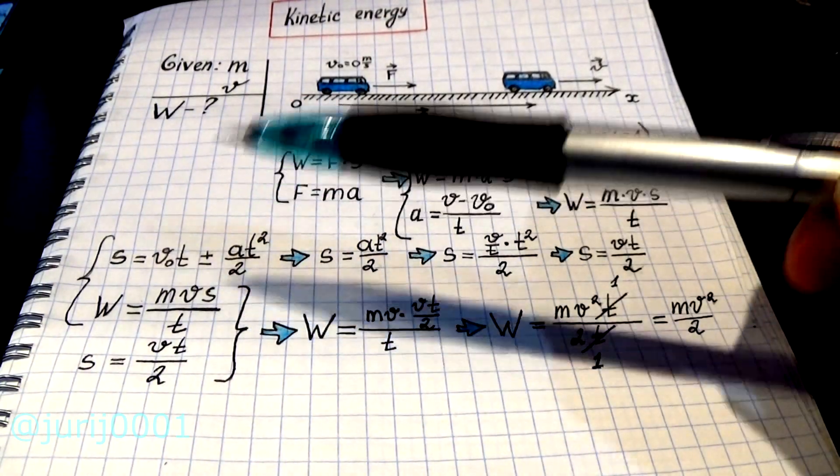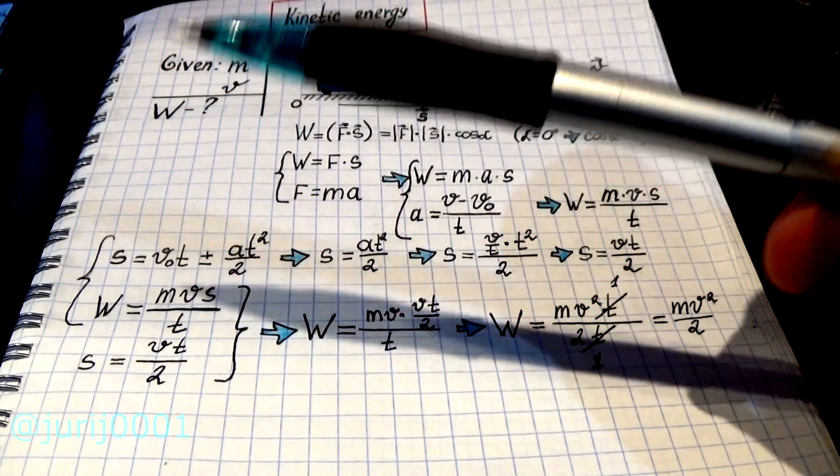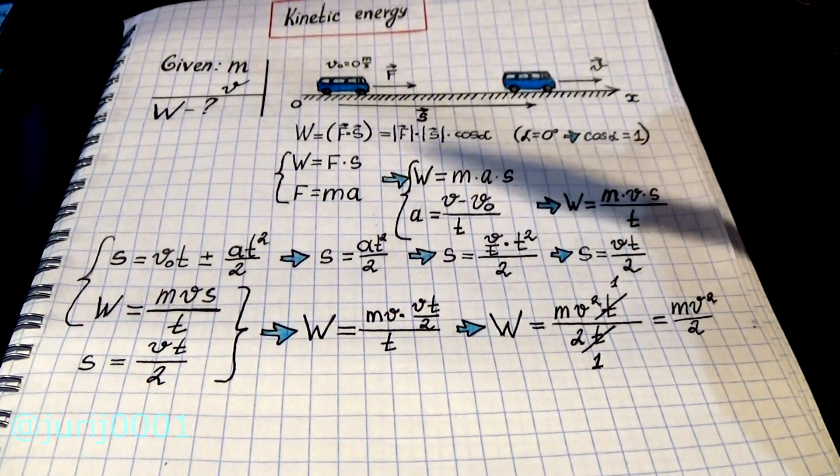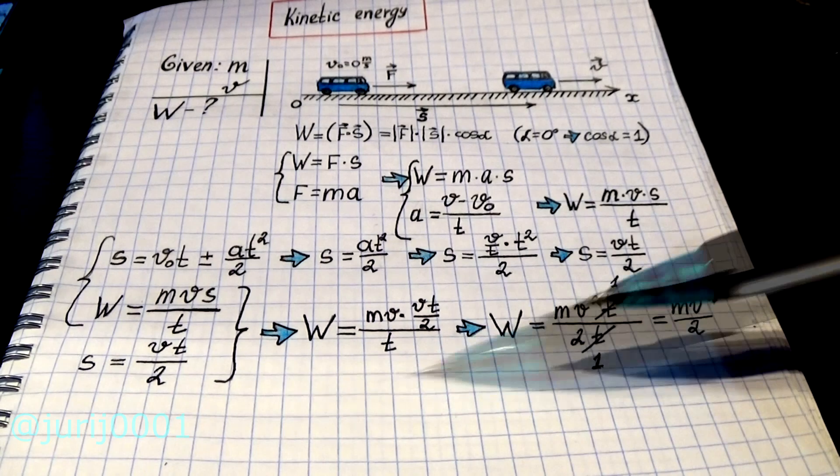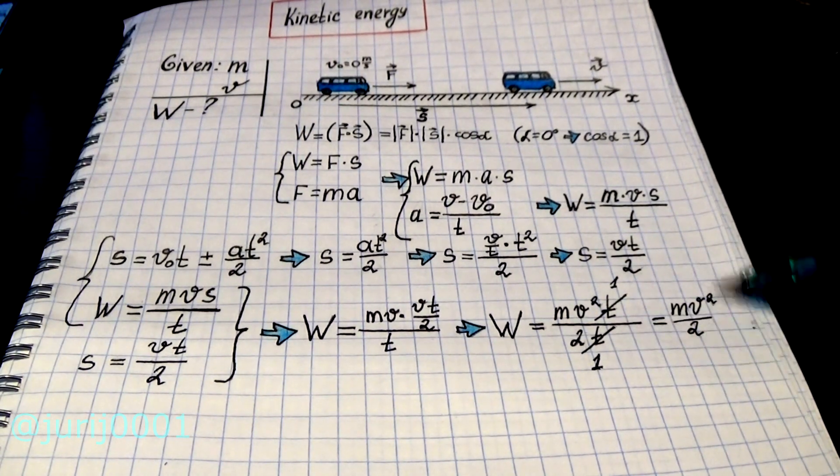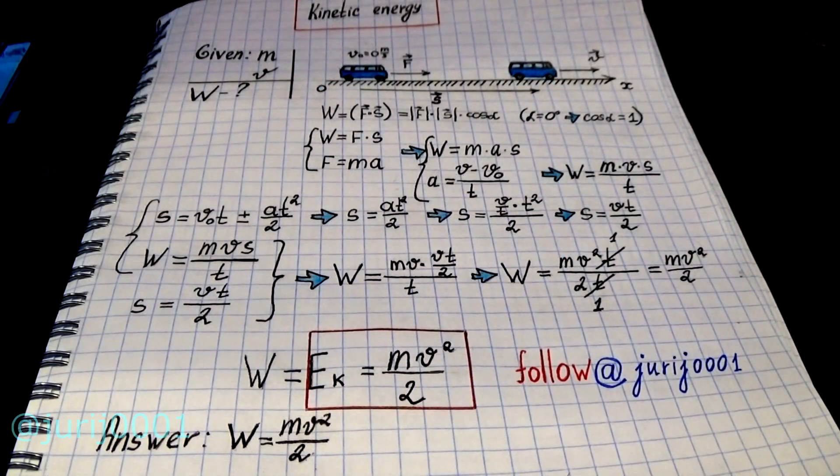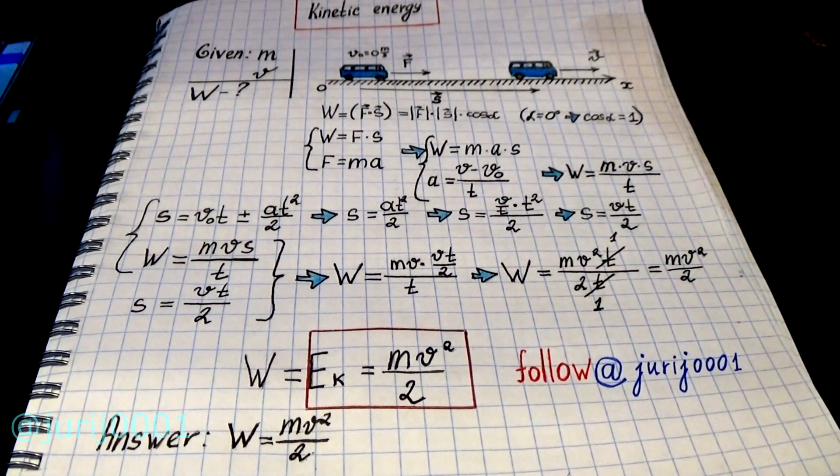And now instead of the path we will substitute the resulting value, and as a result by a simple mathematical transformation we will get the familiar formula. So we have obtained the well-known kinetic energy formula. Thus, the kinetic energy is equal to the work of accelerating the body from a state of rest to a certain speed.